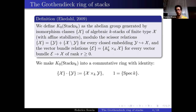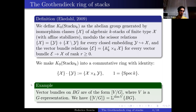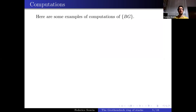We can make K0 Stacks into a commutative ring just as before. Vector bundles on BG are all of the form [V/G] where V is a G-representation, and we have the formula: the class of [V/G] equals the class of BG times L to the dimension of V. This time, we put this into the definition — it doesn't follow from anything else. These are the relations.